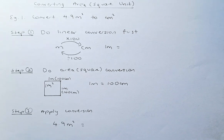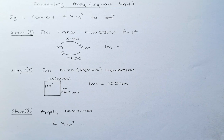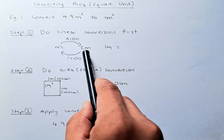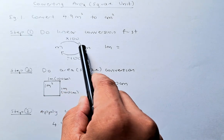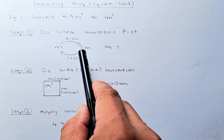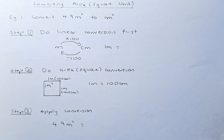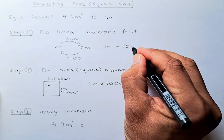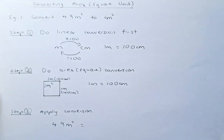There are three steps to do this, and if you follow these, we will be able to do it quickly. The first step is you need to do a linear conversion first. For example, meter to centimeter, you need to multiply by 100. If you are converting centimeter to meter, you divide by 100. So we are going to convert meter to centimeter first — 1 meter is 100 centimeter.